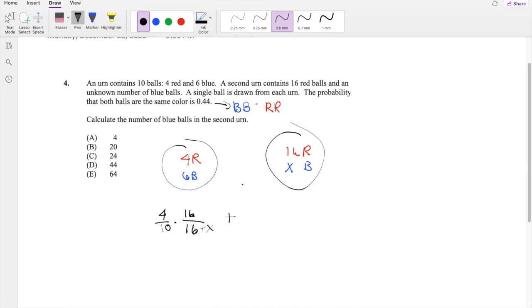Plus what is blue, blue? Well, the probability you're going to get blue from the first one is 6 out of 10. And the probability you're going to get a blue out of the second one is x out of 16 plus x, which is the total amount in this second urn. And this is exactly equal to 0.44.